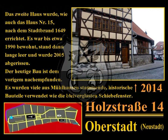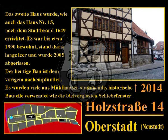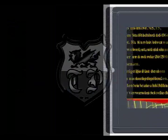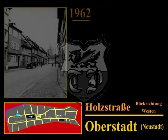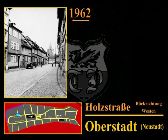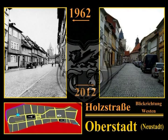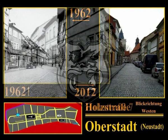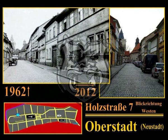Die 80 cm dicke Ostmauer mit deutlichen Brandspuren bildet noch heute die Westmauer des Hauses Nummer 15. Das zweite Haus wurde nach dem Stadtbrand 1649 errichtet, war bis 1990 bewohnt, stand dann lange leer und wurde 2005 abgerissen. Der heutige Bau ist dem vorigen nachempfunden; es wurden viele aus Mühlhausen stammende historische Bauteile verwendet, wie die bleiverglasten Schiebefenster. Aufnahmen aus dem Jahre 1962 zeigen die Holzstraße mit Blickrichtung nach Westen. Erstmals erwähnt wurde die damalige Holzgasse im Jahre 1291; ihren Namen hat sie von den Hölzern, die hier einst zum Bauen und Heizen gelagert wurden.